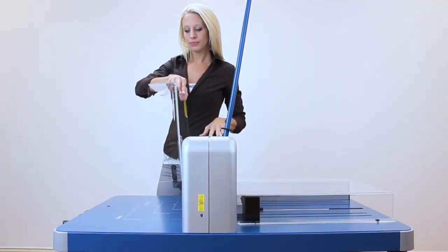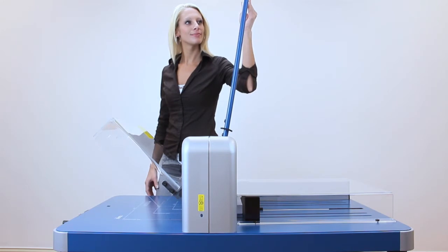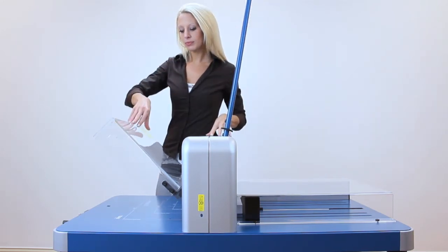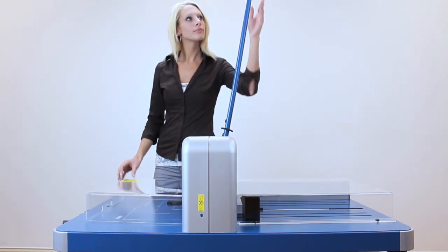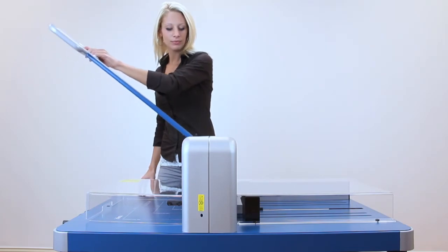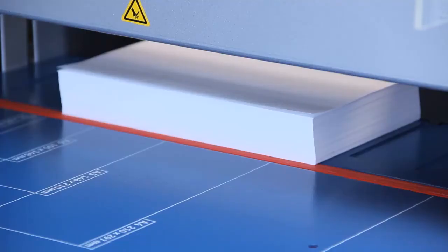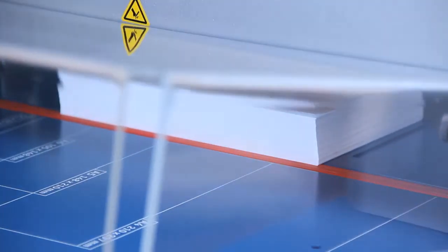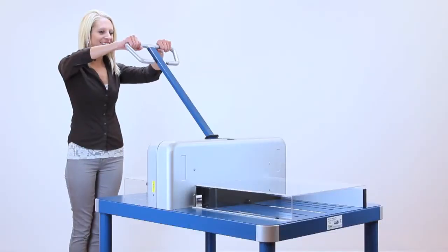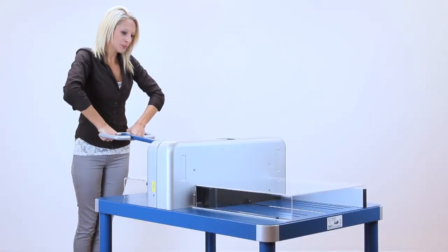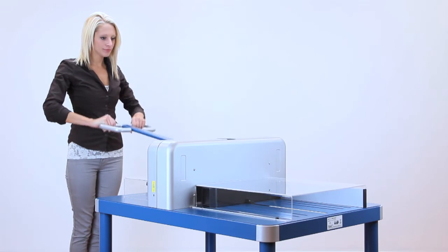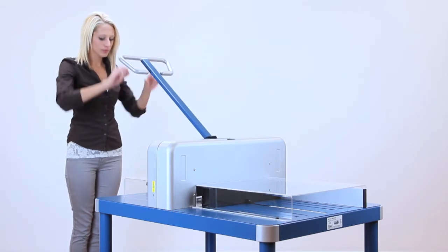Acrylic shields found on either side of the cutting blade can lift up or down to load and remove paper. When the shields are up, the blade is locked in place. It's only when the shields are down and covering the blade that cutting can resume.